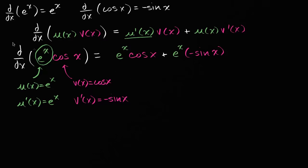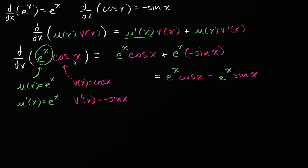Now we can simplify. This is equal to e to the x times cosine of x, minus e to the x times sine of x. Or if you want, you can factor out an e to the x: e to the x times the quantity cosine of x minus sine of x.